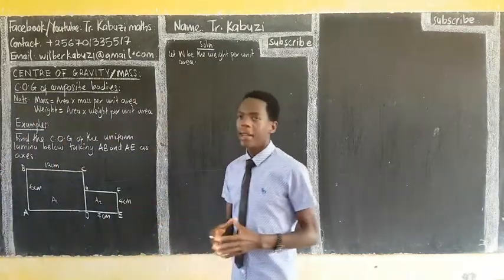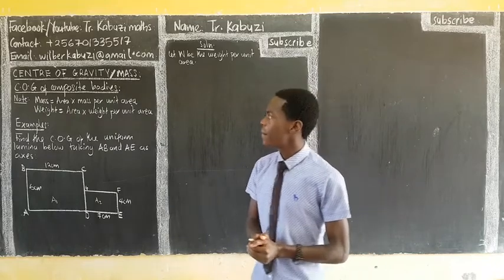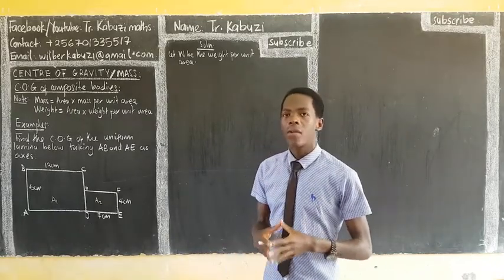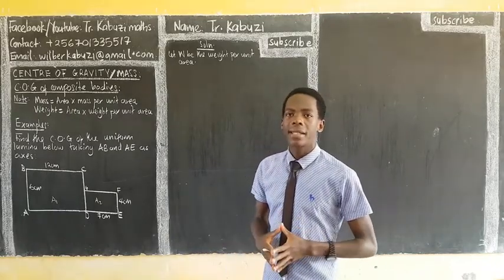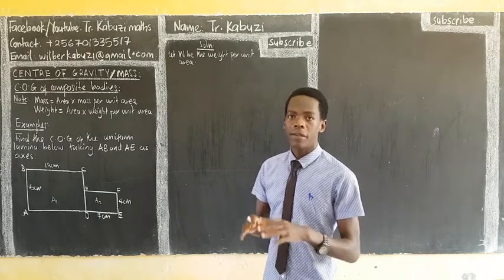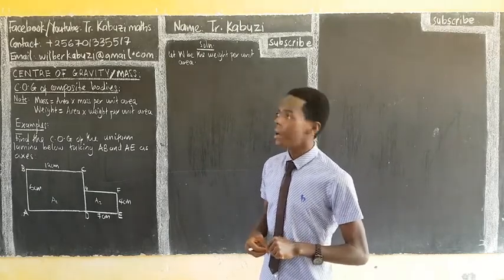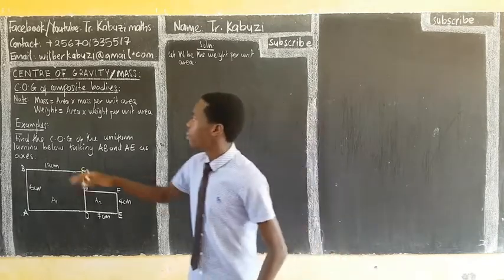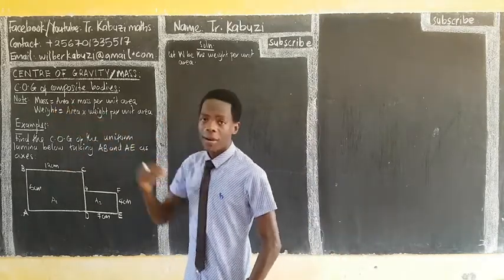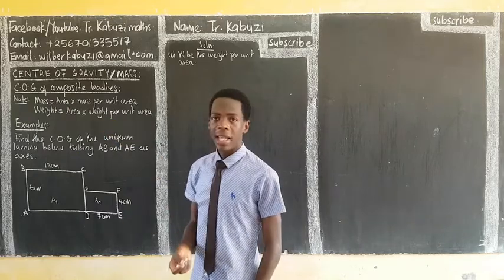Now let us see the first example in composite bodies. The only thing we need to know is how do you get the mass if you have an area. If they give you a body, they give you the area if they give you the dimensions. So to get the mass, we get the area of that body then times the mass per unit area.